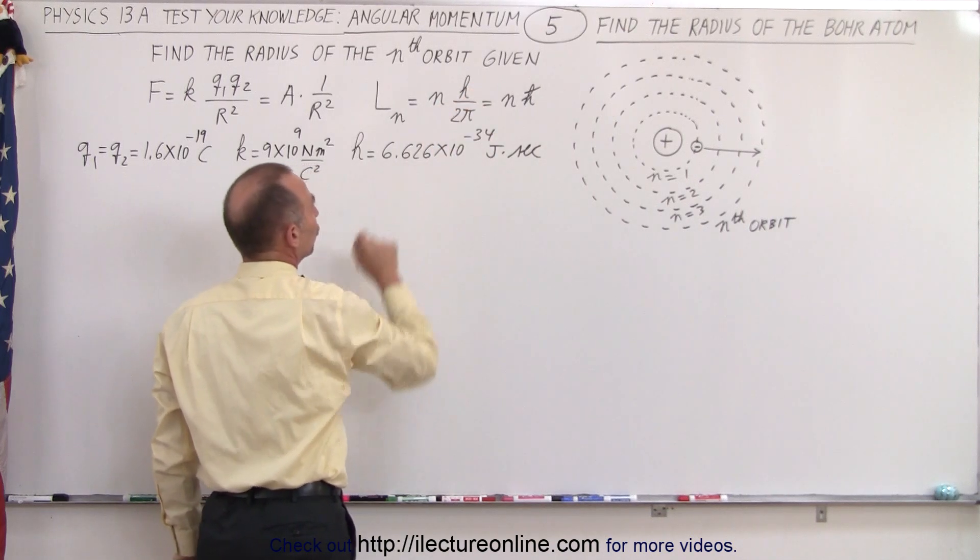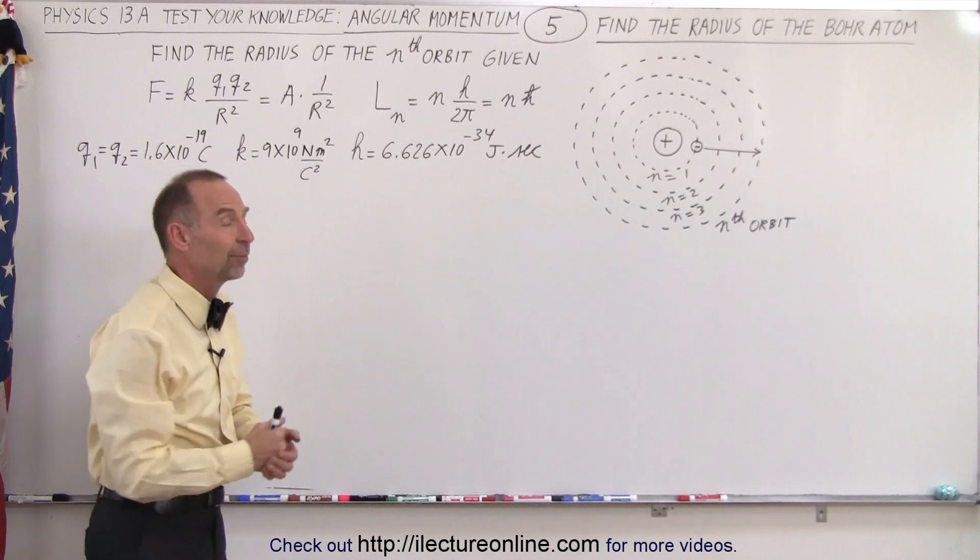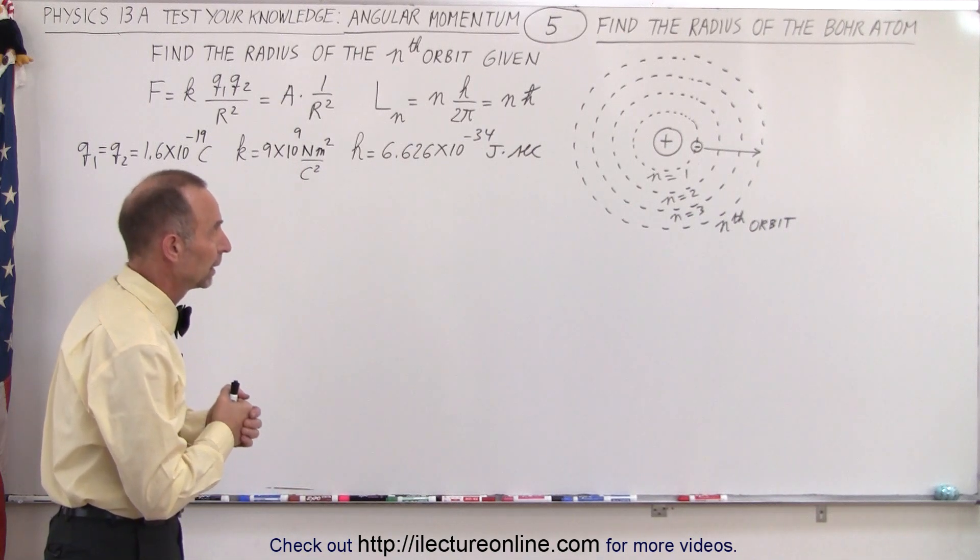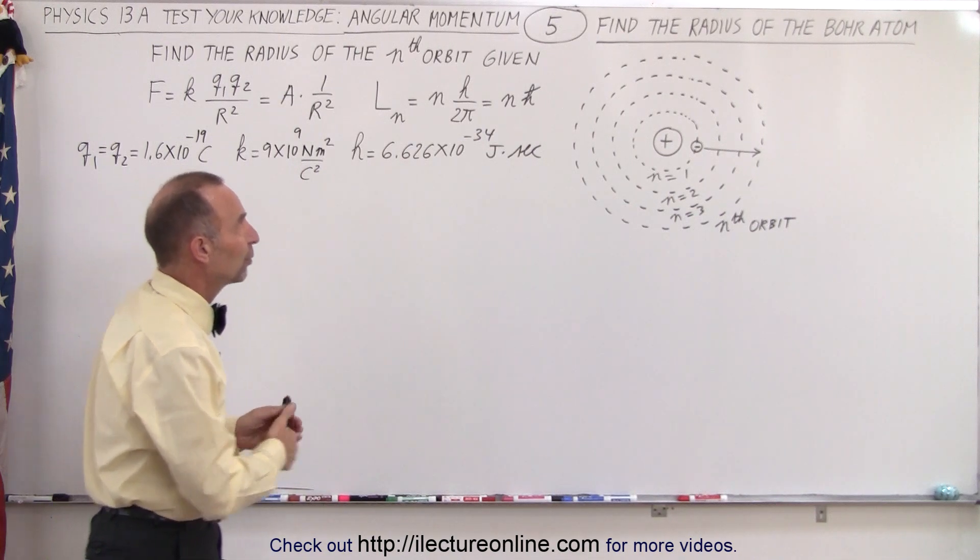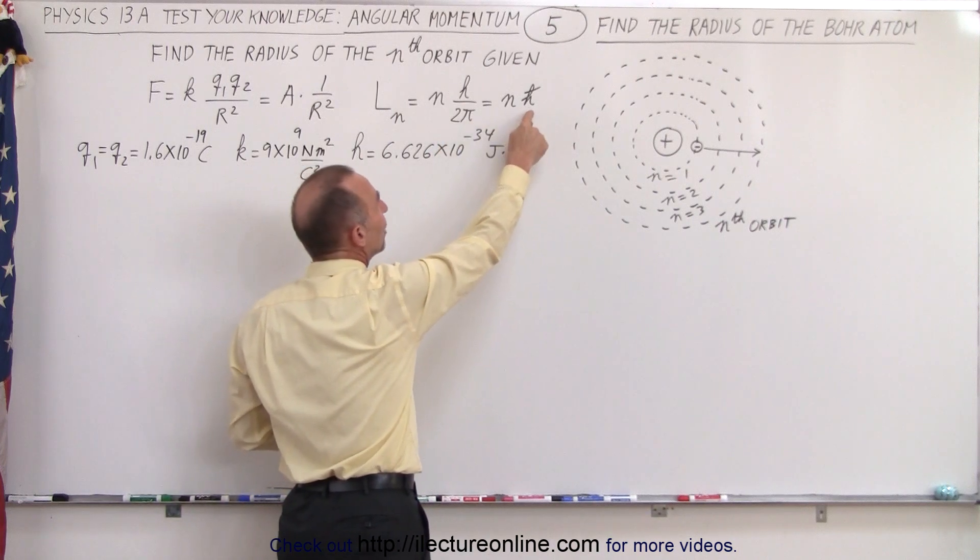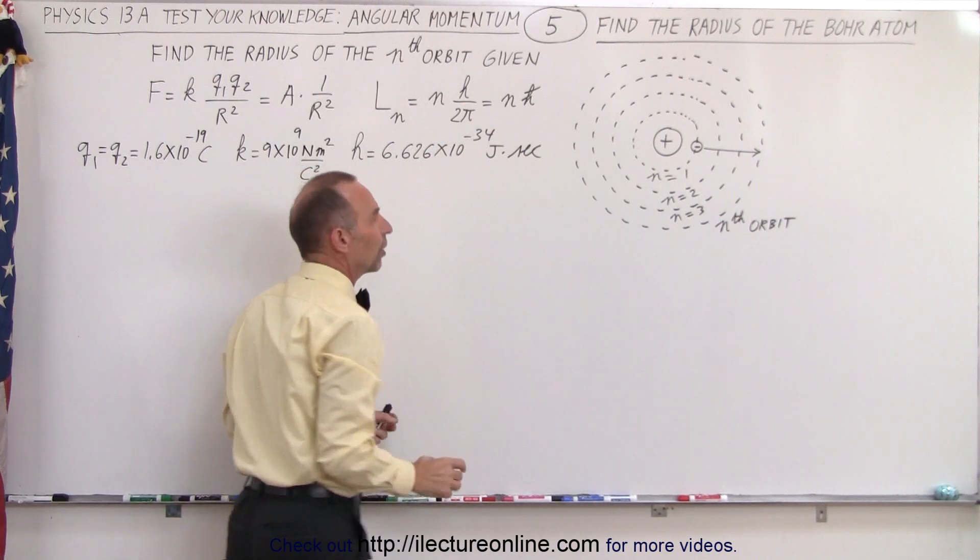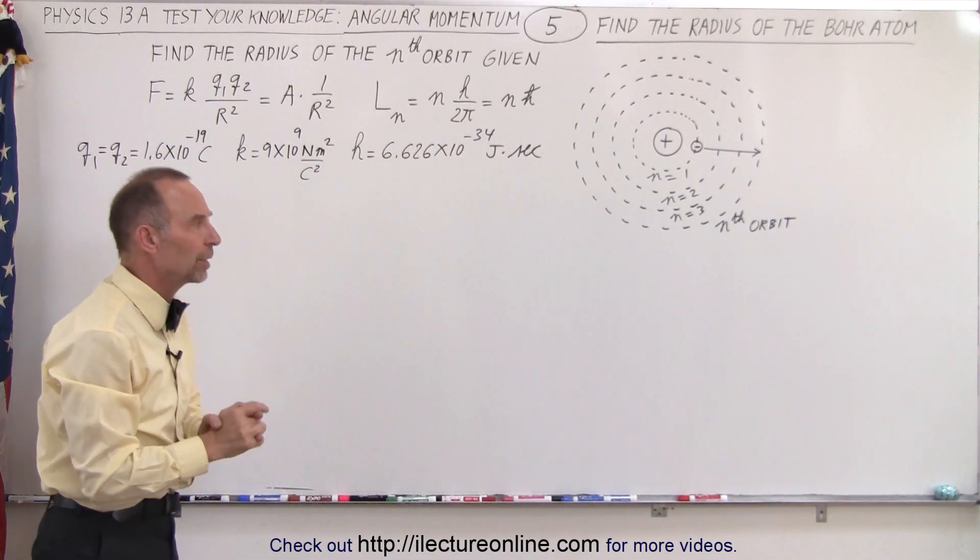h was Planck's constant, determined to be 6.626 times 10 to the minus 34. Sometimes we write h over 2π as h-bar, so it would be n times h-bar. We knew that the angular momentum had to be quantized.